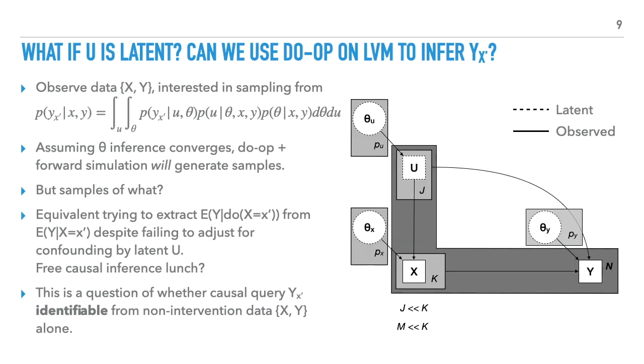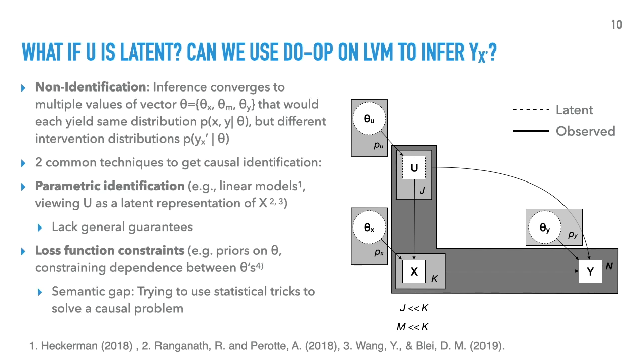Now what happens if U is latent? Assuming we can train a latent variable model to convergence, will our model transformation with the do operation combined with forward simulation still work? Assuming our training of theta converges, the do operation transformation simulation procedure will still generate samples. But samples of what? If this worked, it would be equivalent to getting the predicted intervention outcome from just the predicted outcome, without adjusting for any confounding by the latent U. That feels like a free lunch. In other words, is Y sub x prime still identifiable given just X and Y? Non-identification here means that the inference algorithm converges to multiple values of the vector theta, and these values would each yield the same joint distribution on X and Y, but different intervention distributions on Y sub x prime.